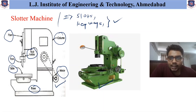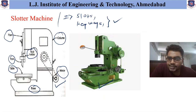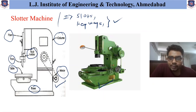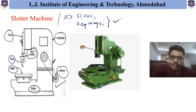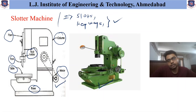The mechanisms available in the slaughter machine are similar to those of the shaper and planer machine. Based on the requirement, the appropriate mechanism can be used, and there might be variation in the mechanism used in the slaughter machine.